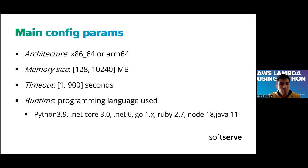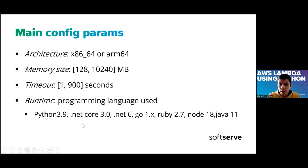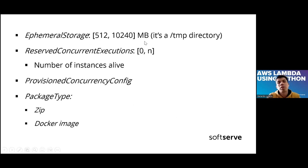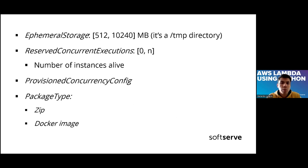You can use Python, .NET Core, .NET, Go, Ruby, Node, and Java — I think those are the newest supported versions of each language. The ephemeral storage is a directory created in your Lambda. If you need to create a file, you can use this directory, but we only have a limited amount of megabytes. If the Lambda is killed, this directory is erased — you can only use it while the Lambda is alive.